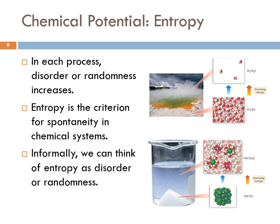This is related to a property called entropy. We can say that entropy is the criterion for spontaneity in chemical systems. Informally, we can think of entropy as disorder or randomness. When the entropy is increasing, that means it's a spontaneous process.